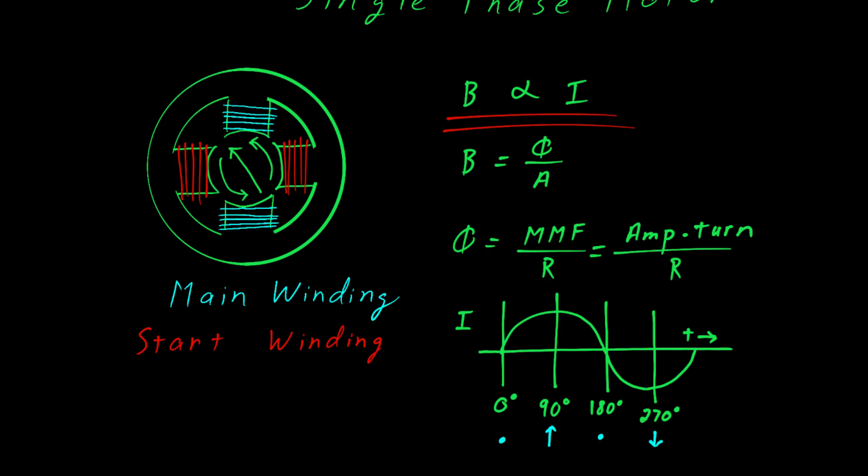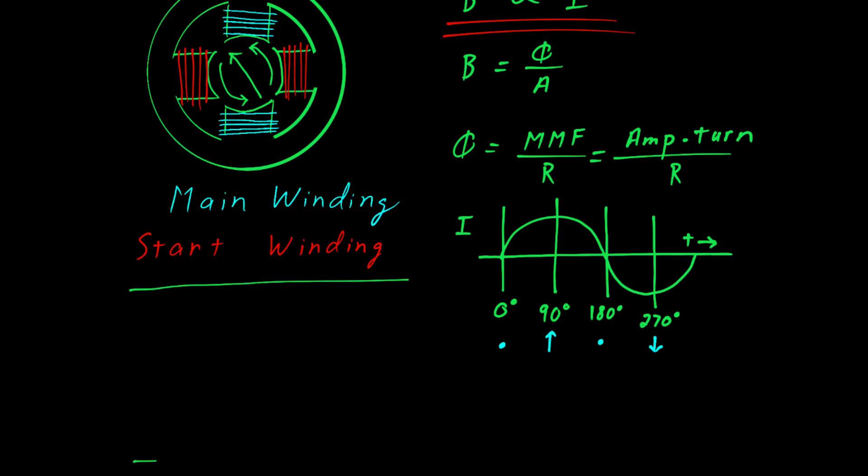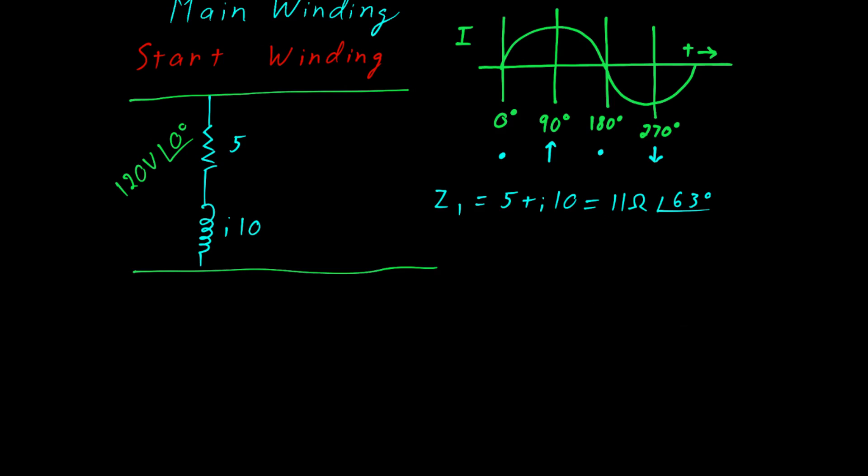Now is a good time to look at the electrical model of the main winding. It consists of two parts, there is a resistance and there's an inductance and we'll pick some arbitrary values of 5 ohms and J10 ohms. We'll also drive it with 120 volts. If you put the two together, let's call it Z1, you'll see that it's 5 plus J10 or if you want to put it in polar form we could say it's 11 ohms at an angle of 63 degrees. At this point we could do a calculation to figure out what the current is but that's not necessary right now. Instead we just want to know the direction of that current and being as it's inductive we know that the current angle is going to be negative, in this case negative 63 degrees.